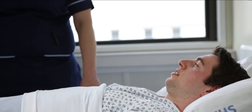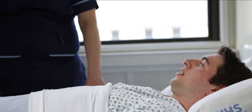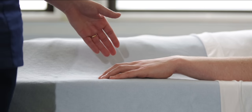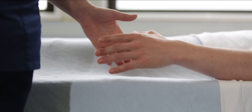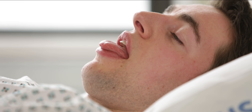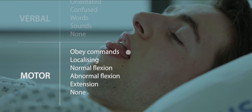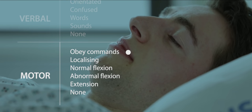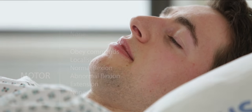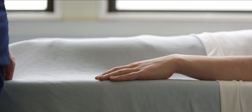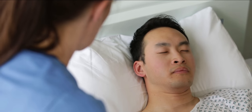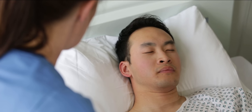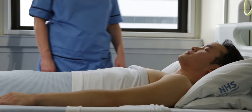To assess the motor component of the coma scale, first ask the patient to perform a two-step action by asking them to grasp and release your fingers with their hand, or opening their mouth and sticking out their tongue. If the patient does this, record 'obeys commands'. If the person can't move their arms — for example because of a spinal injury — you should ask them to open their mouth and stick out their tongue. In a patient who does not obey commands, a peripheral stimulus alone is inadequate to assess the motor component, and an additional central stimulus is needed.